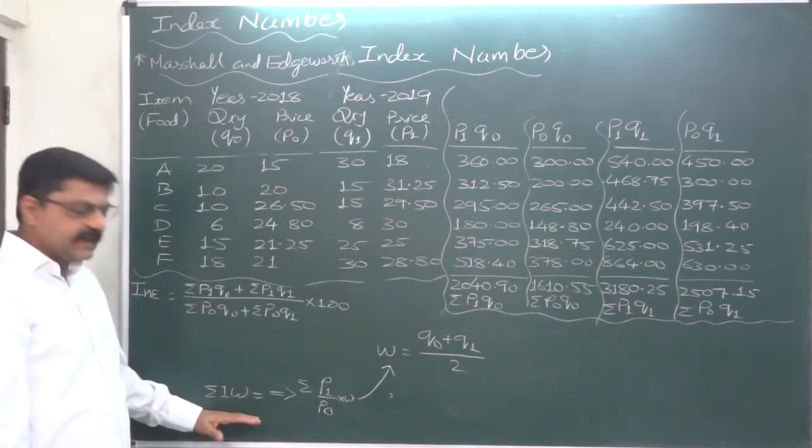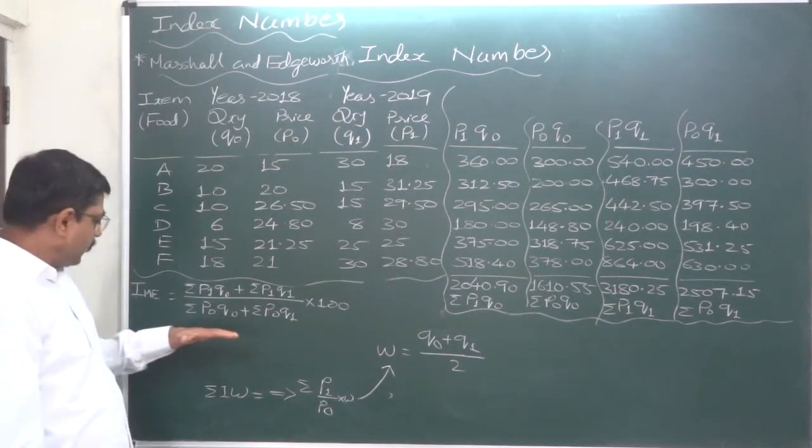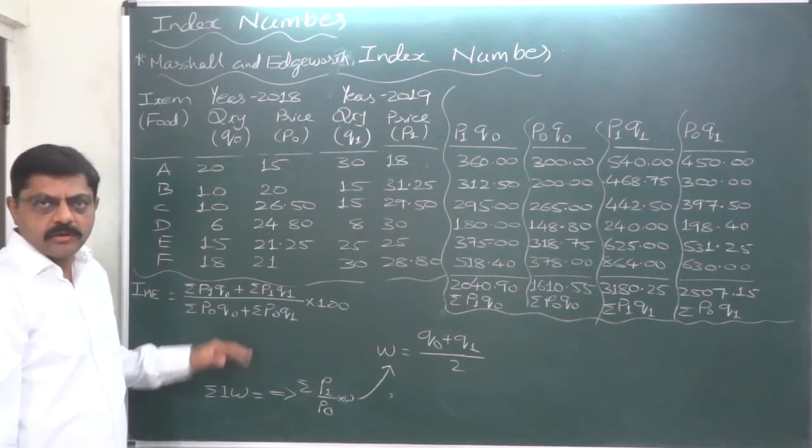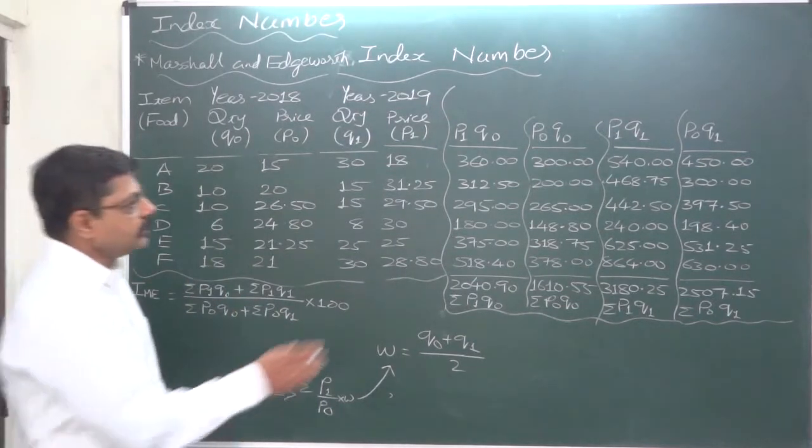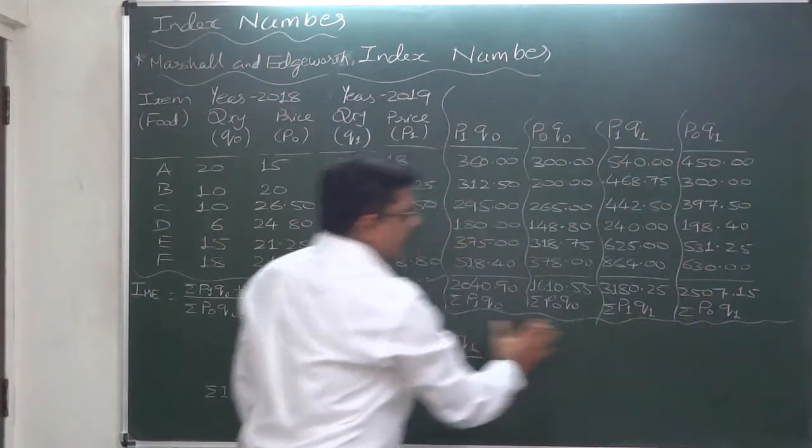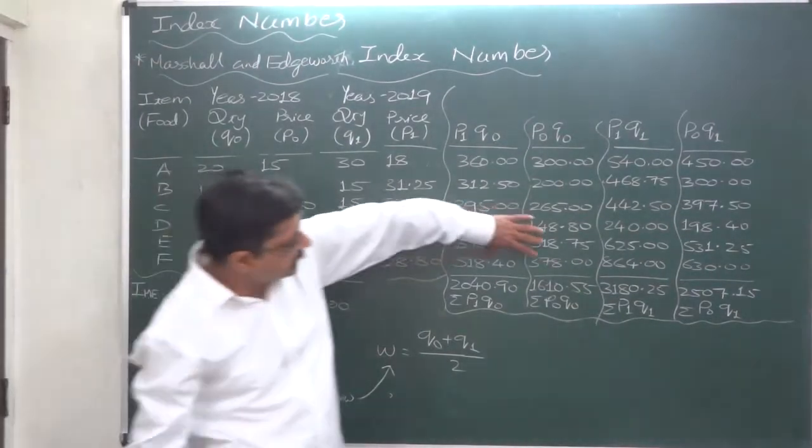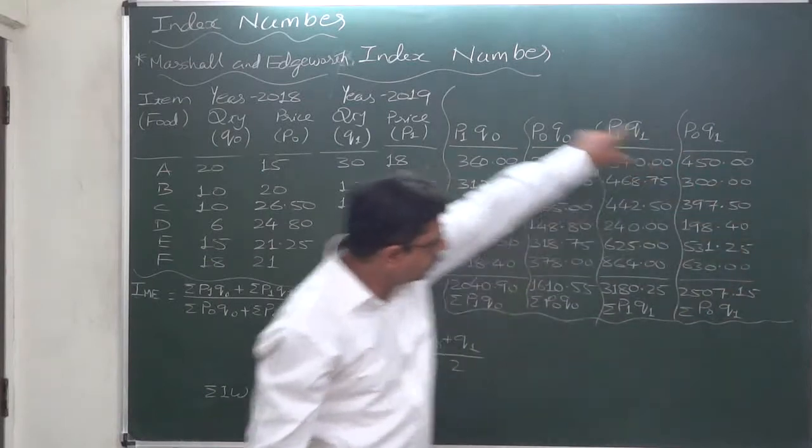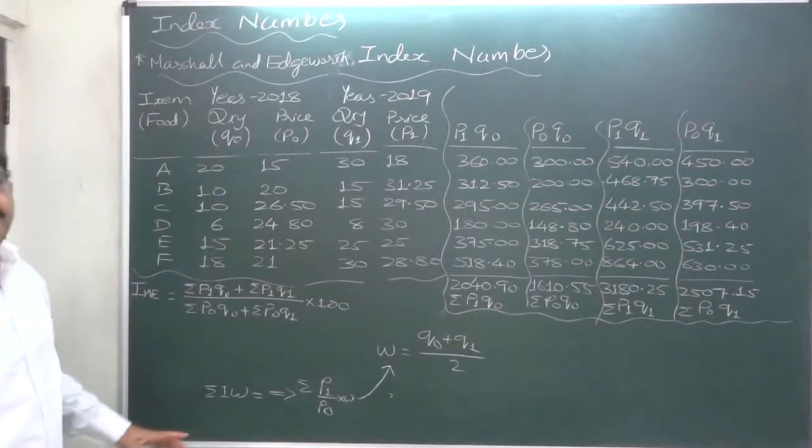Instead of this indirect formula, calculate the index number of Marshall and Hoverty through this formula. Because again in this formula also we need to have the same four columns which we need to calculate Laspeyres index number, Pashe's index number, Fisher's index number and Dorbys and Bowley index number. The same four columns.